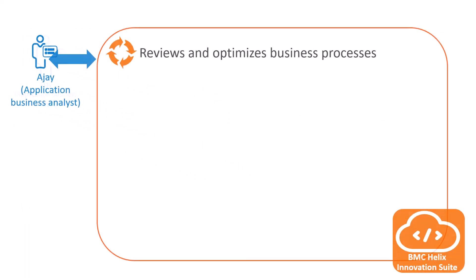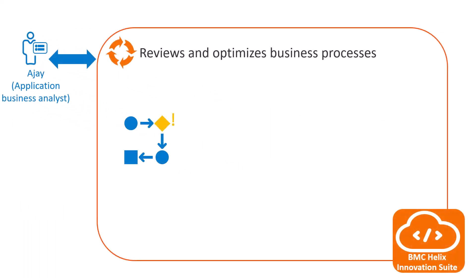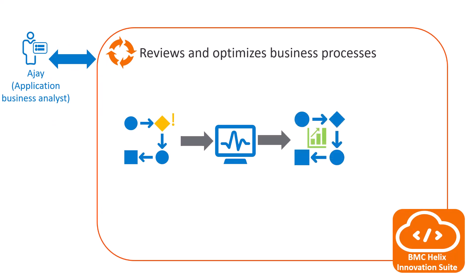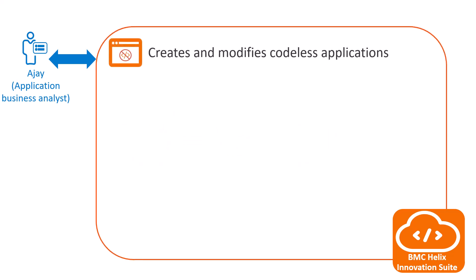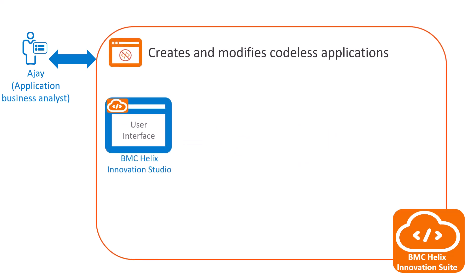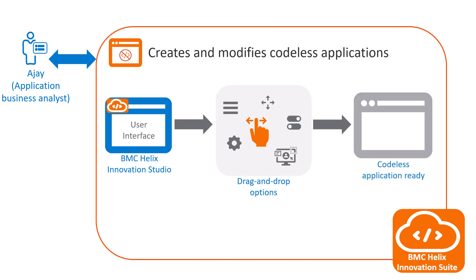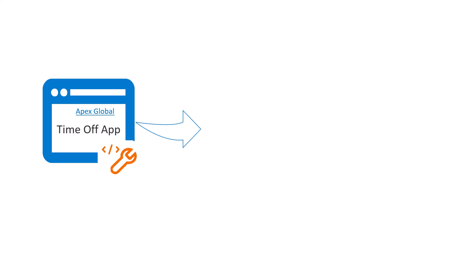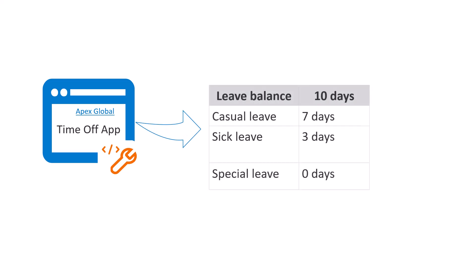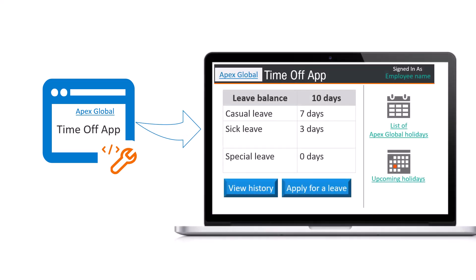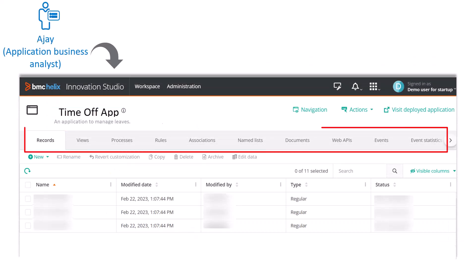Johnny has assigned the user Ajai with the application business analyst role. As an application business analyst, Ajai reviews the business processes and makes modifications to optimize the process workflows. He can create or customize codeless applications by using BMC Helix Innovation Studio and quickly cater to the business requirement. For example, Apex Global wants to make some changes such as showing the leave balance with the breakup of the leaves to the leave management application, and Ajai can easily make these changes from the BMC Helix Innovation Studio UI.